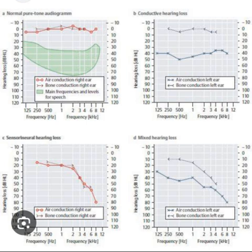Pure tone evaluations are performed in sound-treated rooms to eliminate ambient noise while obtaining hearing thresholds for both air-conducted and bone-conducted sounds. Air conduction tones are presented through inserted earphones or over-the-ear headphones. Bone conduction thresholds are obtained via an oscillating transducer placed on the mastoid process. Tones are presented at decreasing intensity levels in 5 or 10 decibel steps until inaudible, then increased until audible again — a procedure known as the Hughson-Westlake method.